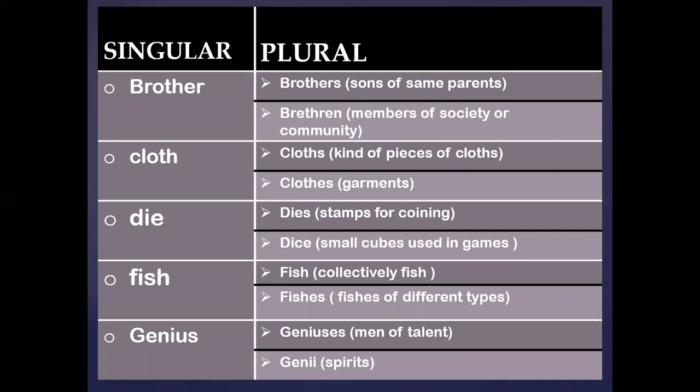'Fish' has two plurals: 'fish', used when referring to one species collected together, and 'fishes', used when referring to different species or different kinds. 'Genius' also has two plurals: 'geniuses', meaning men of great talent, and 'genii', meaning spirits.